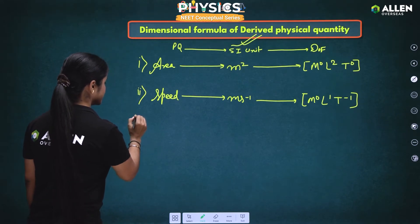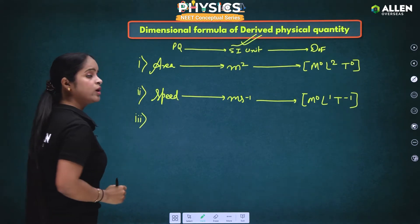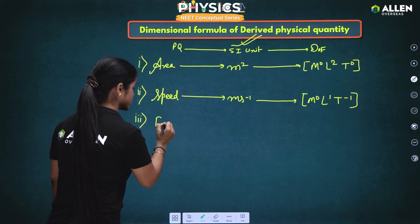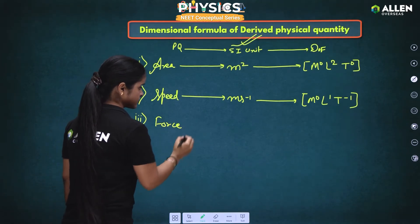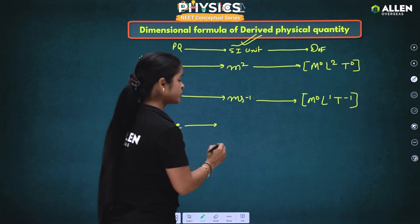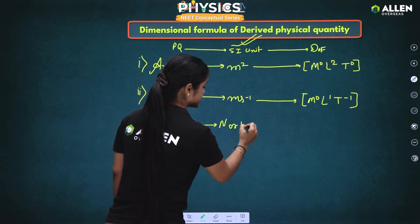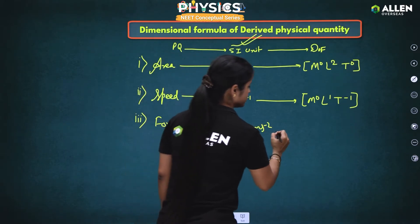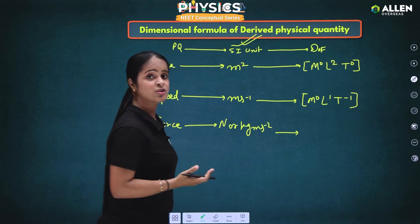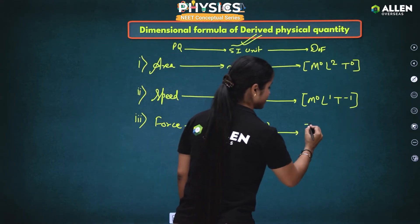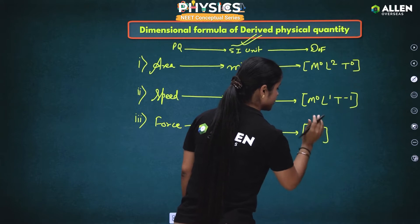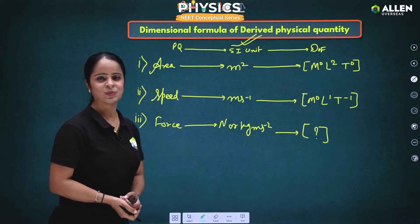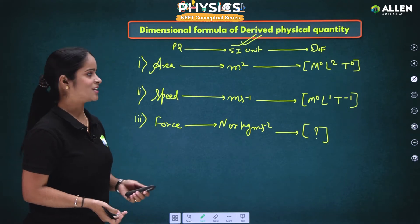The third example is force, which is also a derived physical quantity. The SI unit of force is Newton, or kg·meter per second square. This time I am not going to write the dimensional formula — you are going to write this answer and send it to me in the comment box.